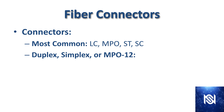Now we're going to look at fiber connectors. The most common connector types are the LC, the MPO, the ST, and the SC. These fiber cables can be either duplex, simplex, or the MPO type. Duplex is bi-directional — there are actually two channels in the cable. Simplex is just one channel, meaning you can only go in one direction at a time. The MPO type actually has 12 individual wires, and it is a very different type of fiber cable than the others you'll see most commonly.